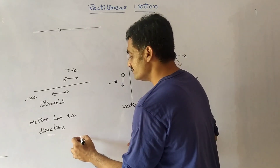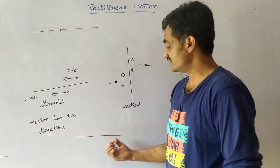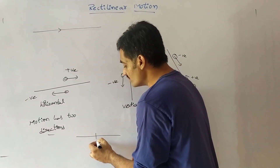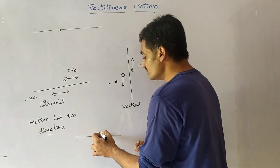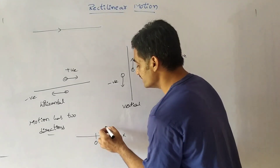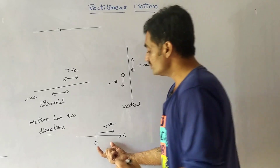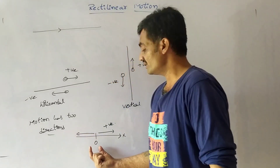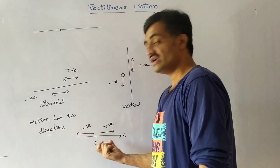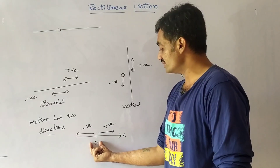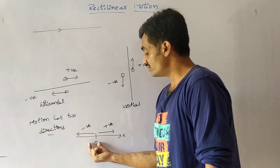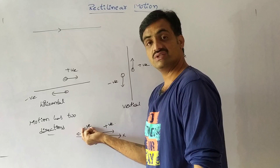We can represent motion based on the reference plane. If we consider a straight line with the origin at the center, and if the body moves along the positive x direction, then we represent it as positive. If the body moves along the negative x direction, then we represent it with a negative sign. So, based on the origin, movement along the positive x axis is positive and movement along the negative x axis is negative.